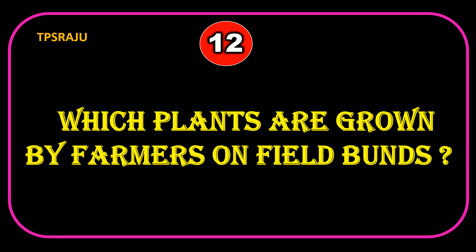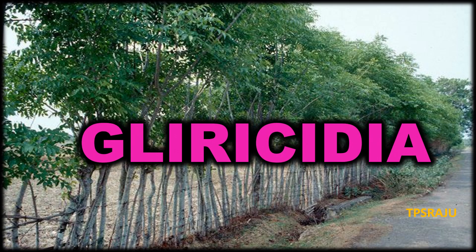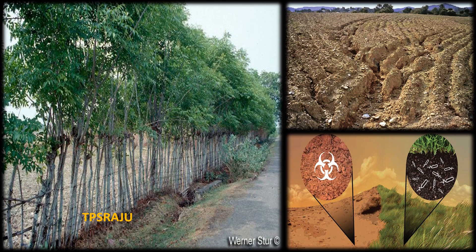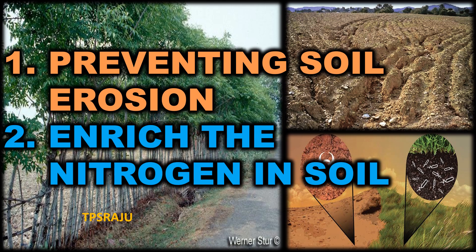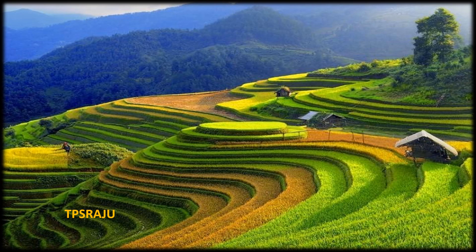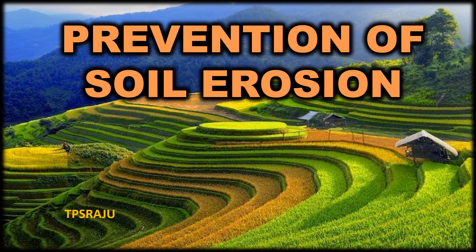Which plants are grown by farmers on field bands? Glyricidia plants. Why should farmers grow Glyricidia plants on field bands? Glyricidia plants prevent soil erosion and enrich the nitrogen in soil. Contour field banding also helps in prevention of soil erosion.